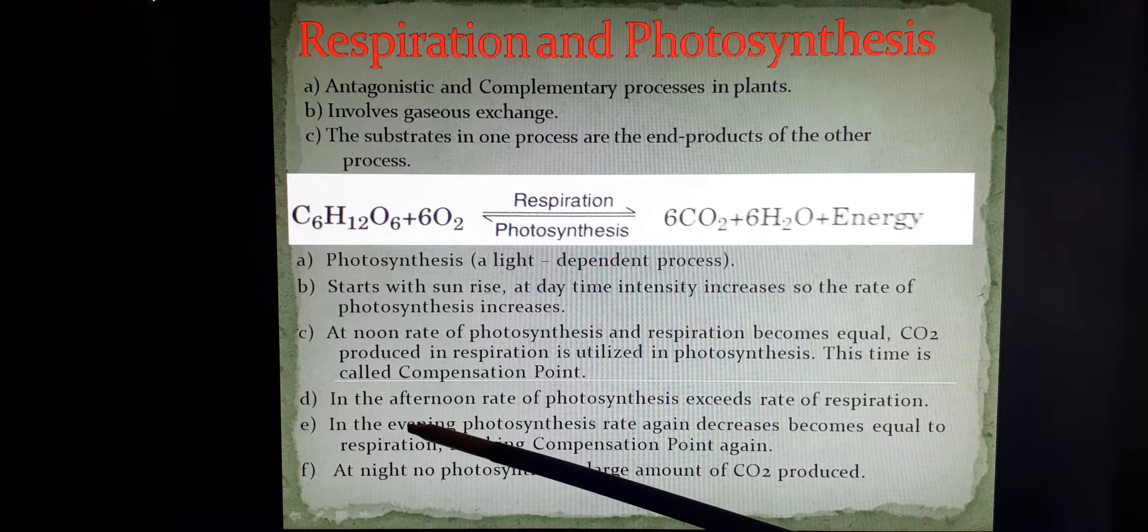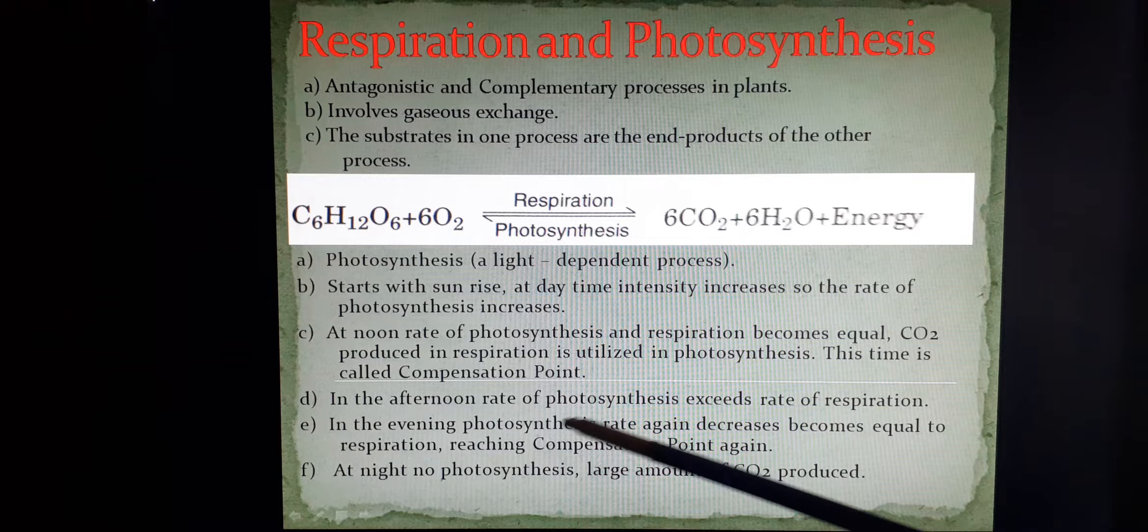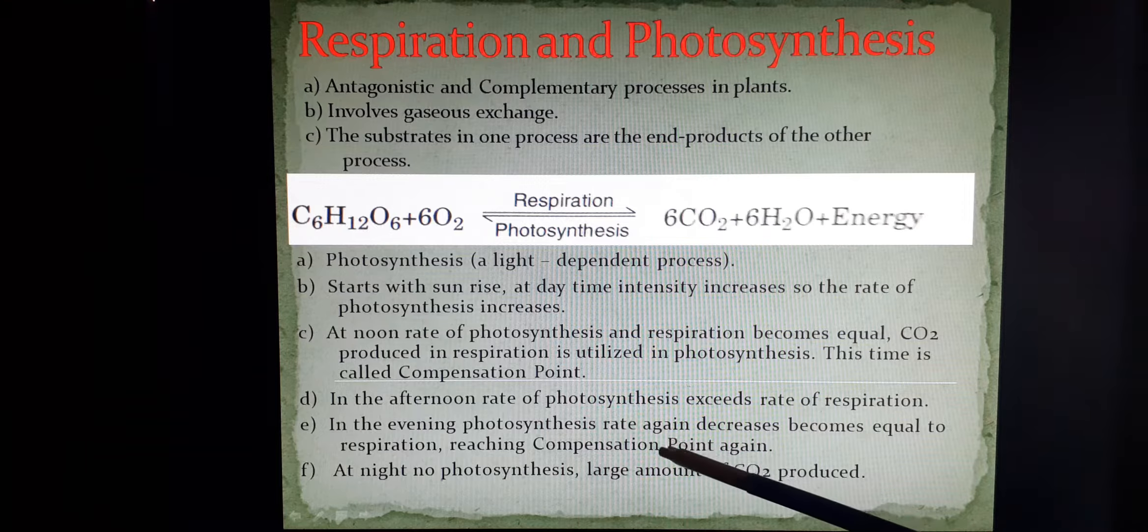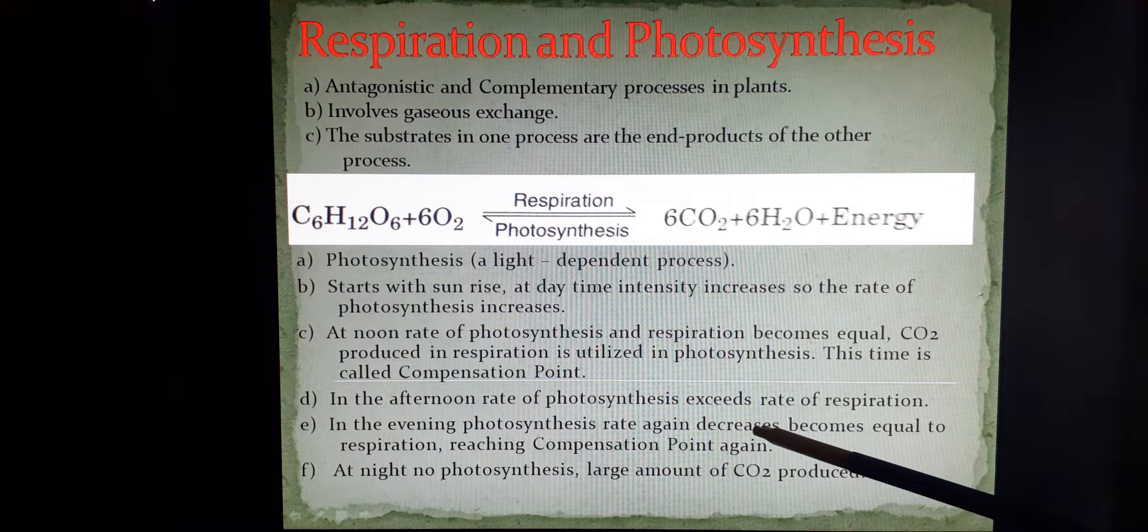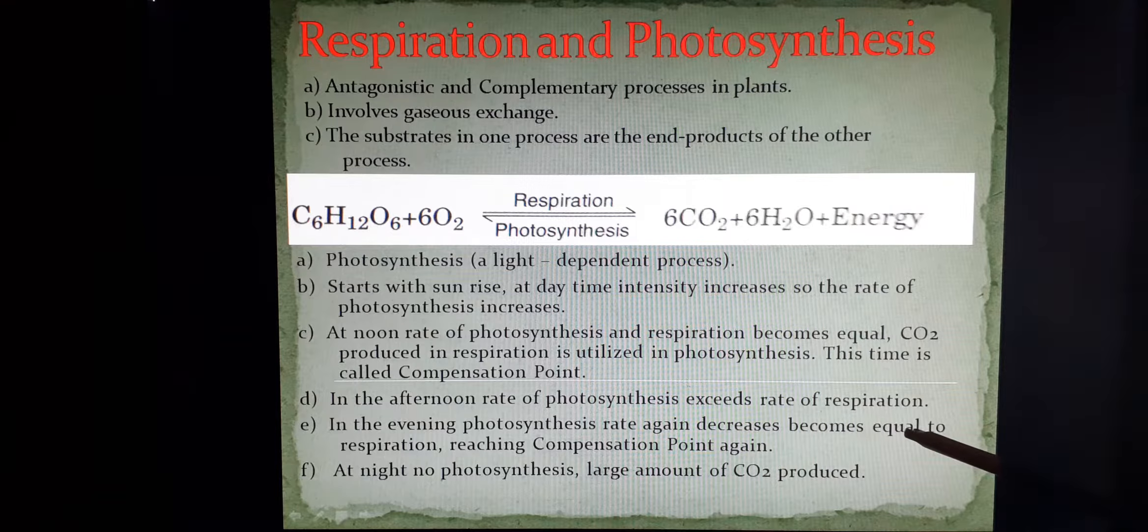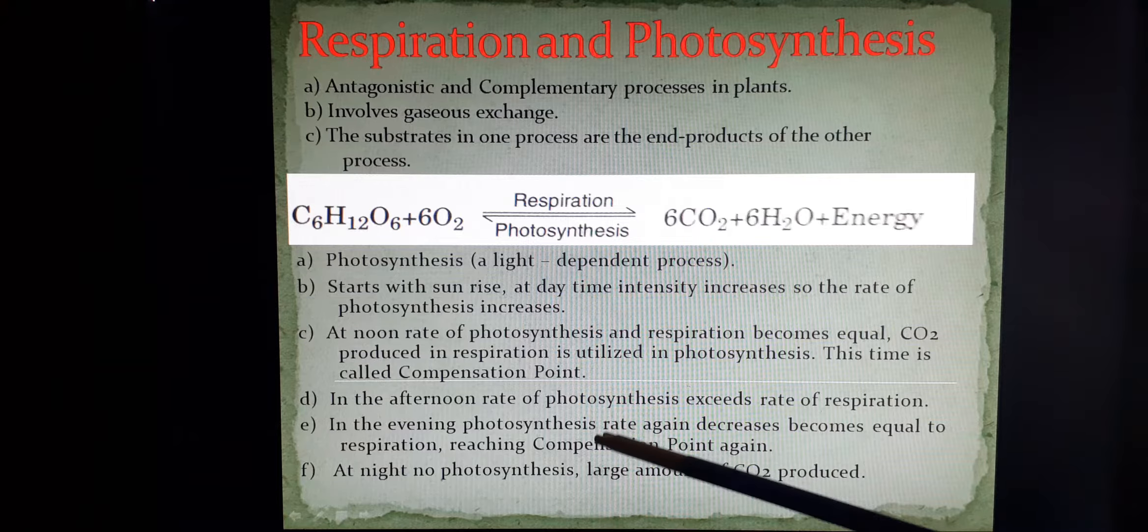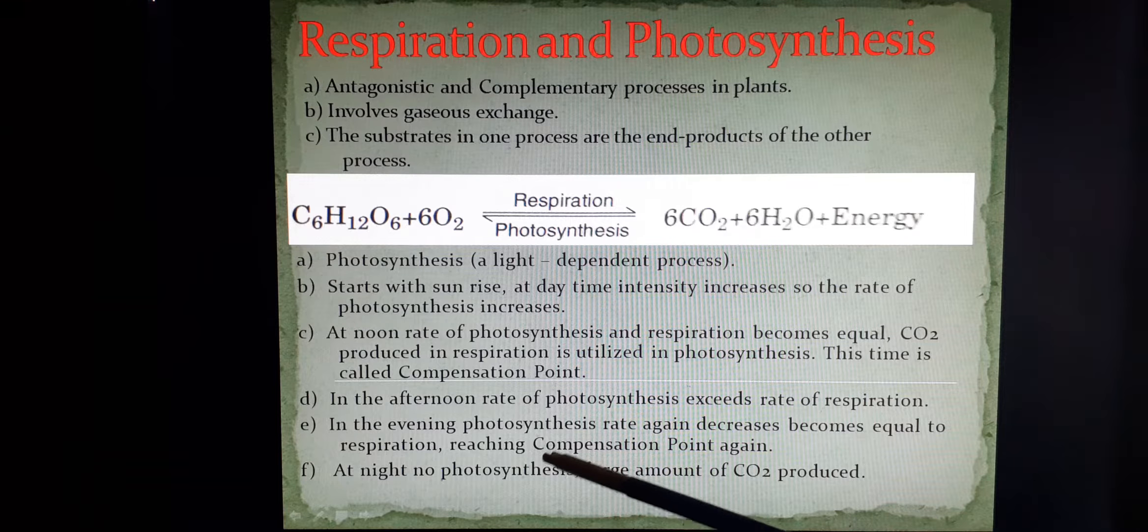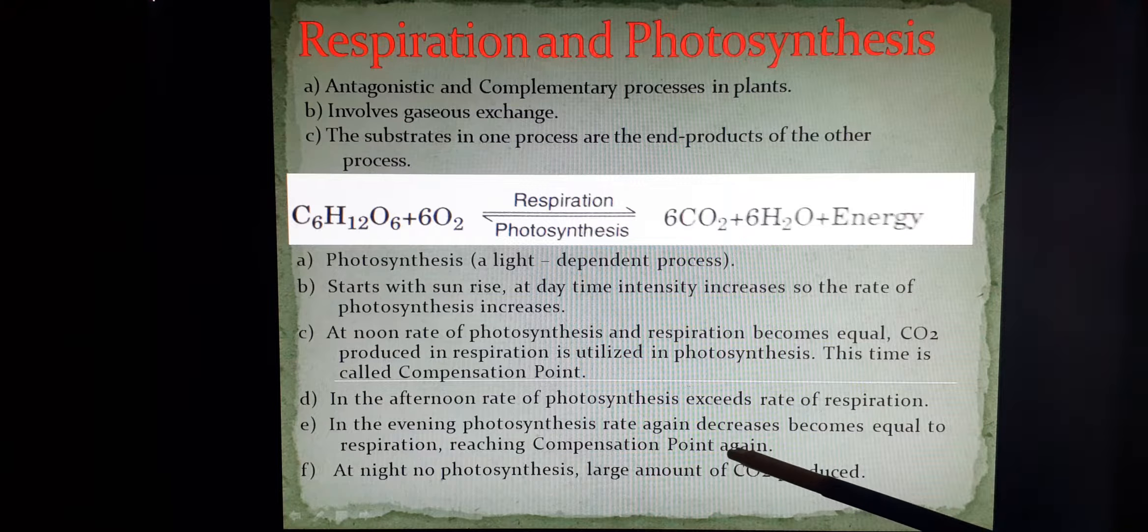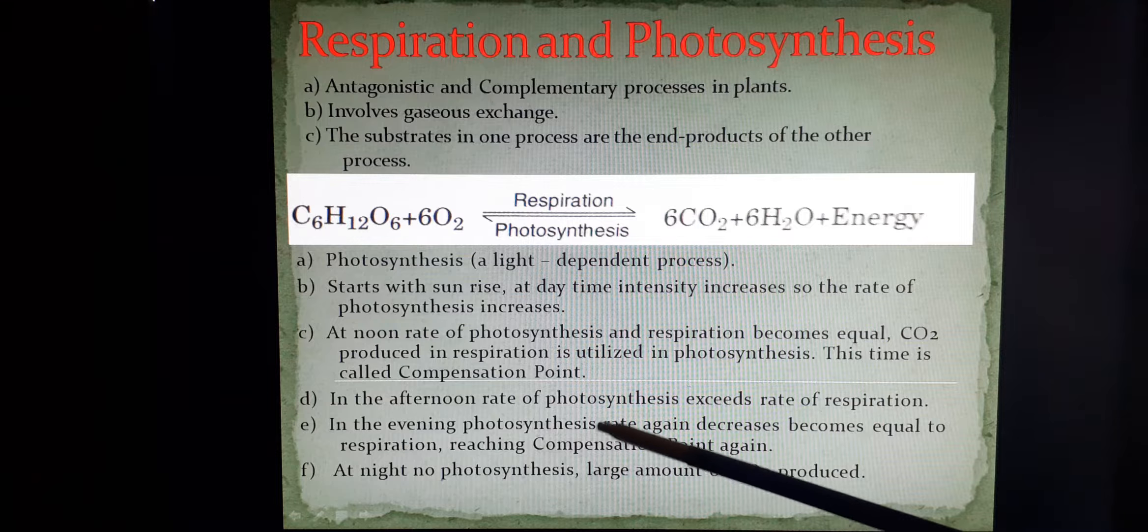In the evening, the light intensity has decreased, so the photosynthesis rate again decreases down. Now once again, the rate of respiration and rate of photosynthesis become equivalent. Again, the plant reaches compensation point. This shows that the plant reaches compensation point twice in a day.